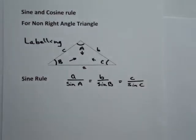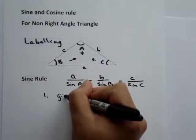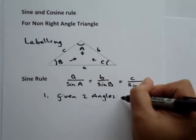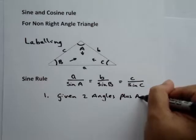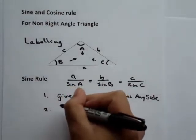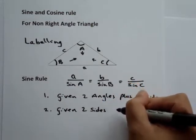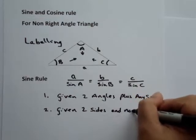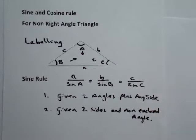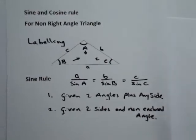There are two cases where we apply the sine rule. The first case is where we're given two angles plus any side. The second case is if we're given two sides and a non-enclosed angle. Those are the two cases where we apply the sine rule.